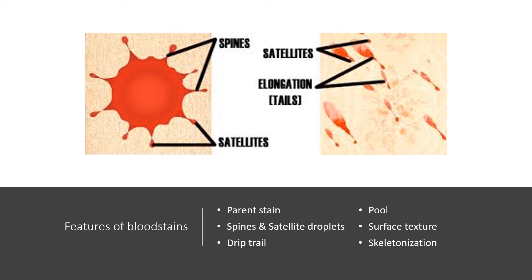So if you take a blood spatter that's right here and let it dry for a couple of minutes, and then you go to wipe it away — you might have noticed this when you get a cut that you can't wash off right away — most of what remains fairly liquidy will wash away easily, but you'll have a crusty ring of blood left behind that you need to wipe away with a little more effort. That suggests blood had been smeared or had been quickly wiped away.